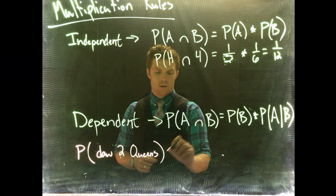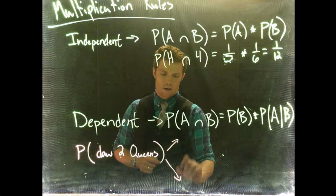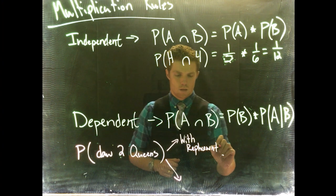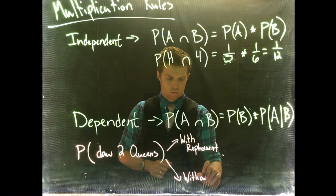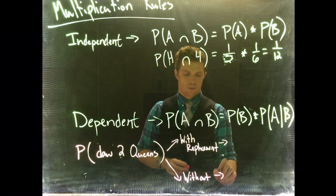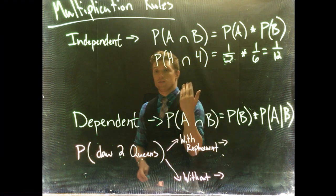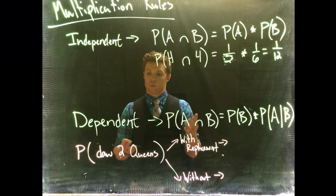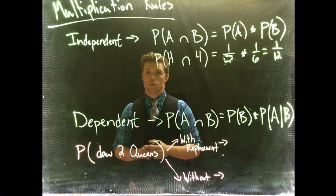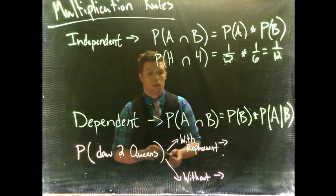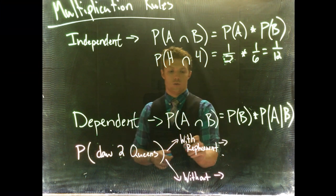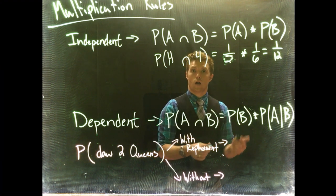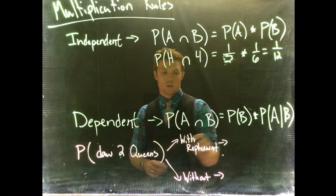We'll do one with replacement and one without. With replacement, I would draw a card from my deck, put it back in, and then draw another card. The probability depends on how the problem is presented. Drawing with replacement is an independent event, because drawing one card has no effect on the draw of the second card.